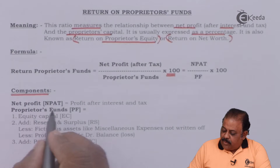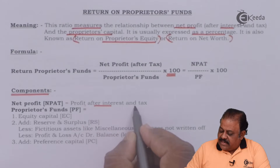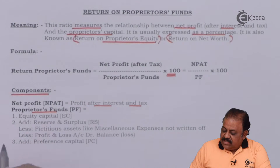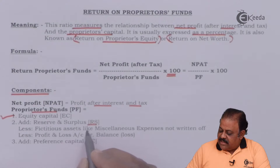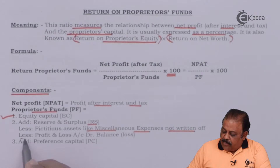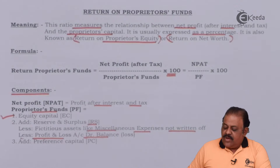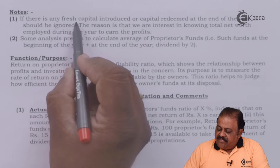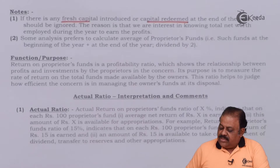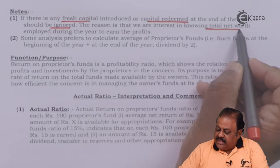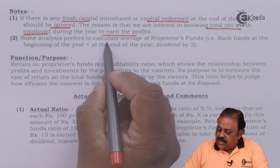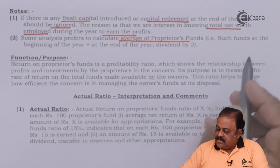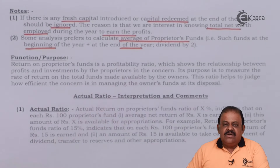The components of the formula: net profit after interest and tax is used as the numerator. Proprietors fund consists of equity share capital plus reserves and surplus, less fictitious assets like miscellaneous expenses not written off or profit and loss account debit balance (i.e., loss), plus preference share capital. If there is any fresh capital introduced or capital redeemed at the end of the year, it should be ignored, as we are interested in the total net worth employed during the year. Some analysts prefer to calculate the average of proprietors fund — that is, funds at the beginning and end of the year divided by two.